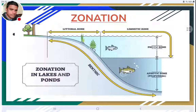The third zone is the profundal zone, located just below the limnetic zone. In another classification based on sunlight availability, lakes and ponds are divided into two zones: the photic zone and the aphotic zone. The photic zone extends about 200 meters in depth from the top layer of water, and it comprises both the littoral zone and the limnetic zone, since sunlight is available in both.